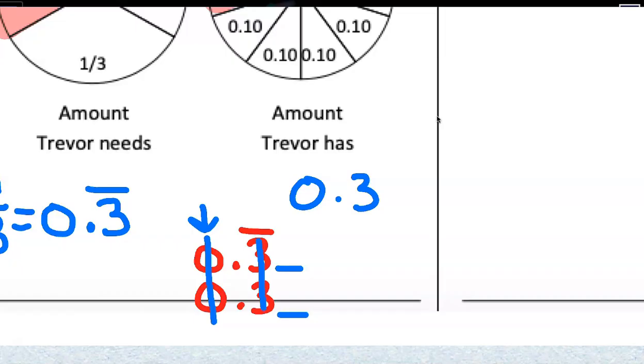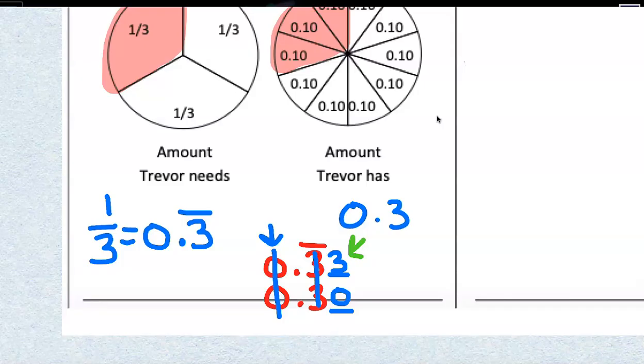What number would go next here, and what number would go next here? So, that 0.3 repeating tells me what is the next number. The next number would be a 3, because it keeps repeating. On 0.3, or three tenths, we have no other number, so we would put a 0 to hold that place value. Now, I can compare these two place values. 3 and 0. So, Trevor needs this amount, but he only has this amount. Does he have enough? No. This number is bigger than this number, so no, he does not have enough. 0.3 repeating is greater than 0.3.